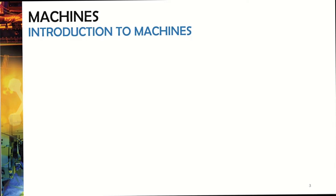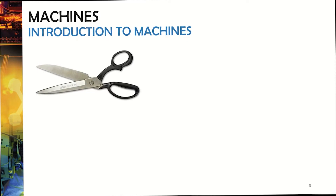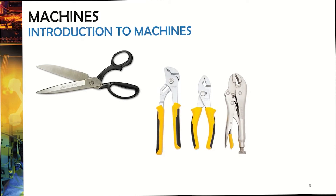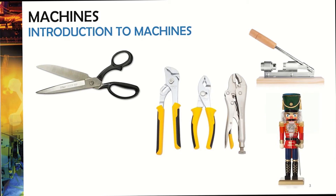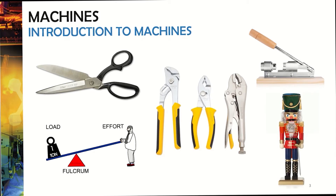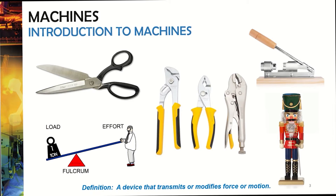A lot of you may have a fear of machines based off of my Terminator reference, but let's get back to things around your house. Scissors are an example of a machine. You've probably got other tools like wrenches and pliers, and another example is the fulcrum where you put a lever on top and decrease the amount of force necessary to lift a heavier object. The definition of a machine is a device that transmits or modifies force or motion.